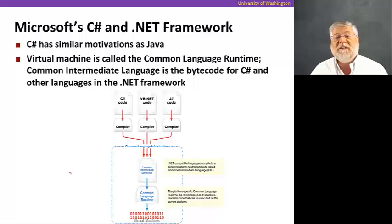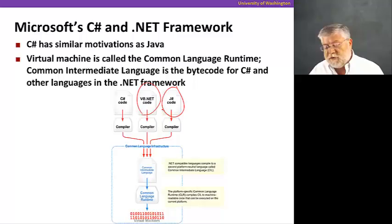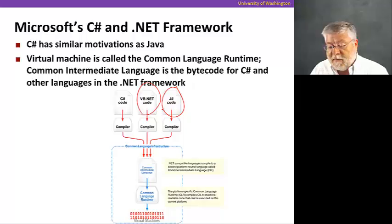Microsoft C Sharp and .NET Framework are another example of these same concepts. C Sharp has a lot of similar motivations to Java. And the virtual machine in this case, rather than being a JVM, is called the common language runtime. And there's a common intermediate language that takes the place of the bytecodes in the case of C Sharp. And just like in Java with many other languages using the Java bytecodes, there are many languages that use the common intermediate language or CIL that Microsoft developed. And in this case, things like J Sharp, Visual Basic are all languages that compile to the same common intermediate language that then is translated to the particular machine and CPU that we want to run our code on.